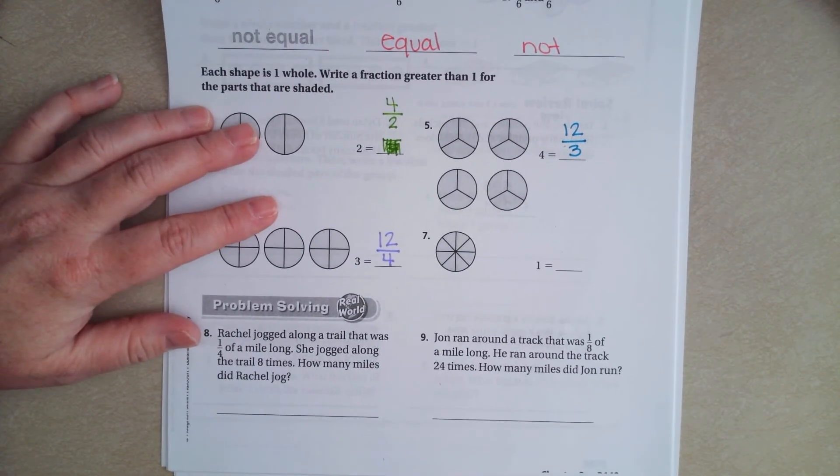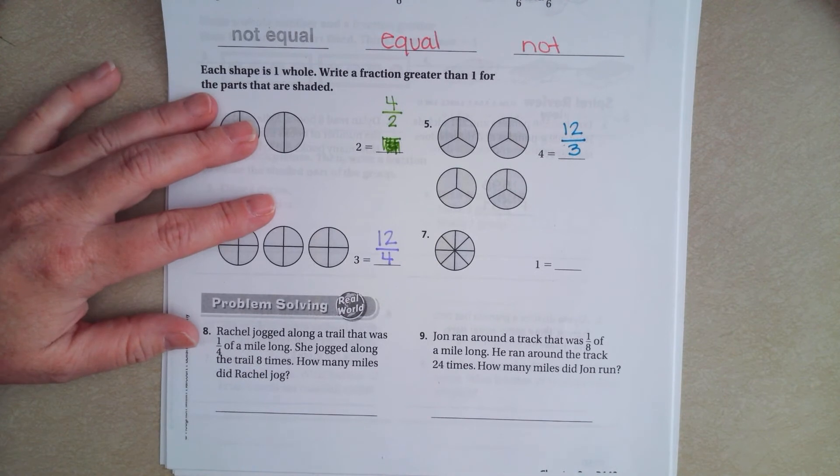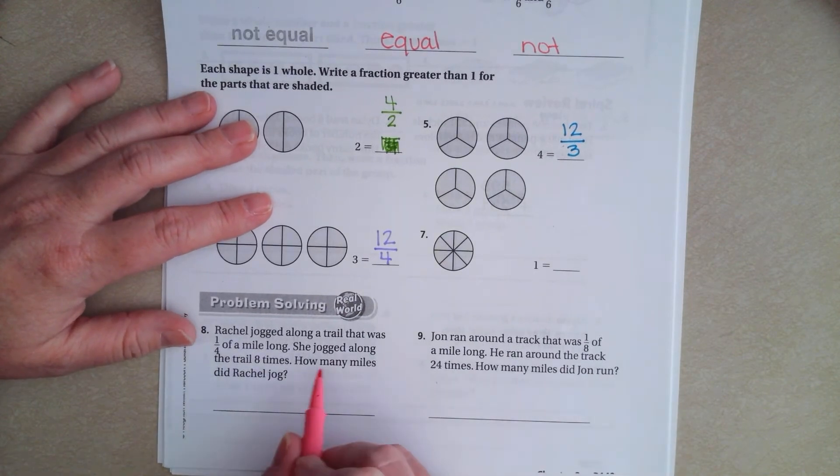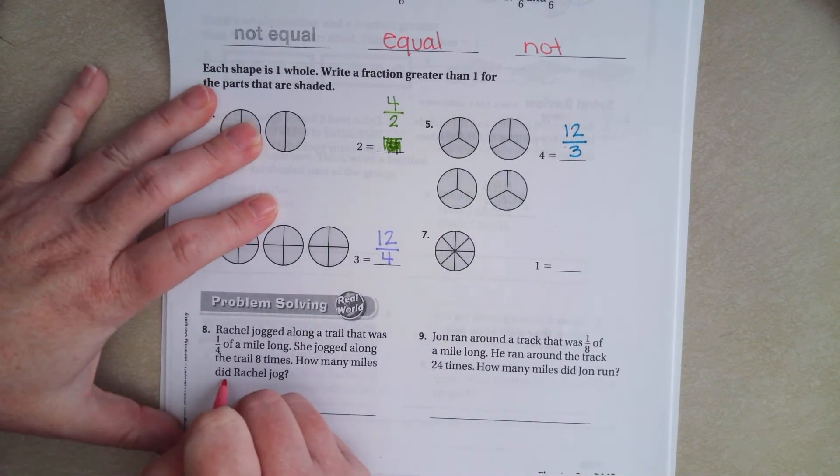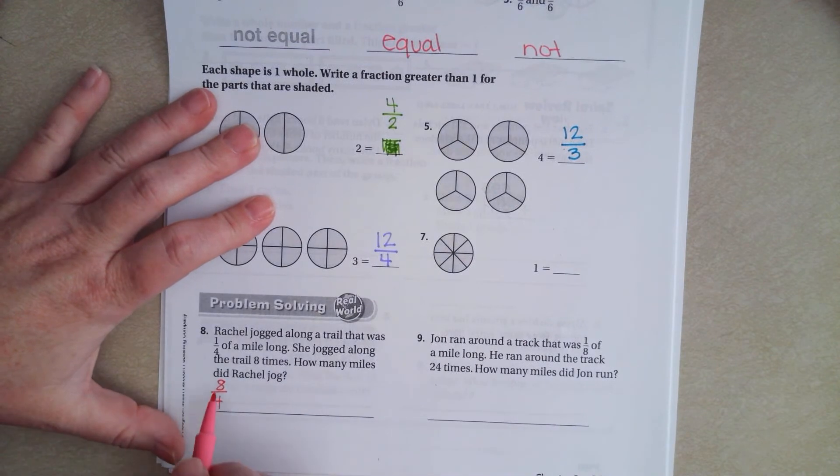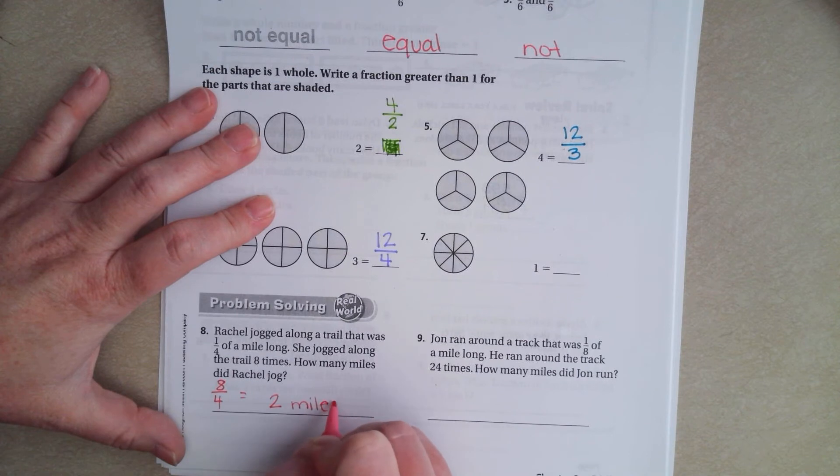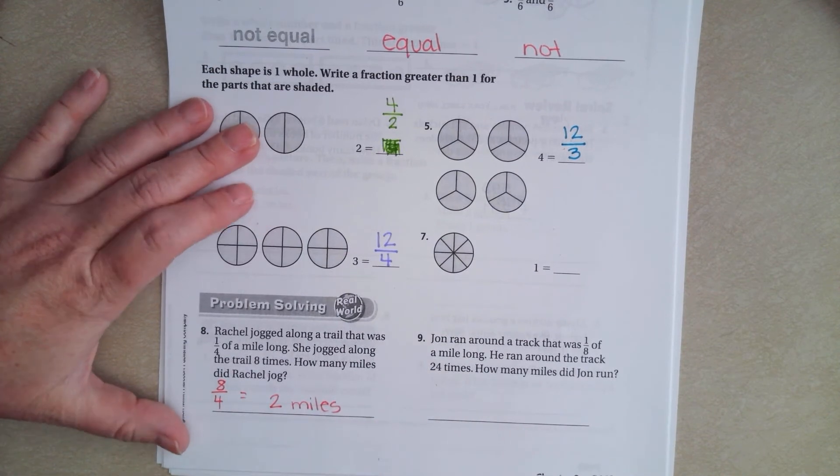Rachel jogged along a trail that was a quarter of a mile long, one fourth of a mile long. She jogged along the trail 8 times. How many miles did Rachel jog? Well, that would be 8 over 4. Well, 4 goes into 8 2 times. So, 2 miles.